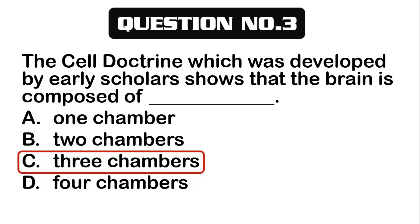The correct answer is letter C, three chambers. The cell doctrine which was developed by early scholars shows that the brain is composed of three chambers.